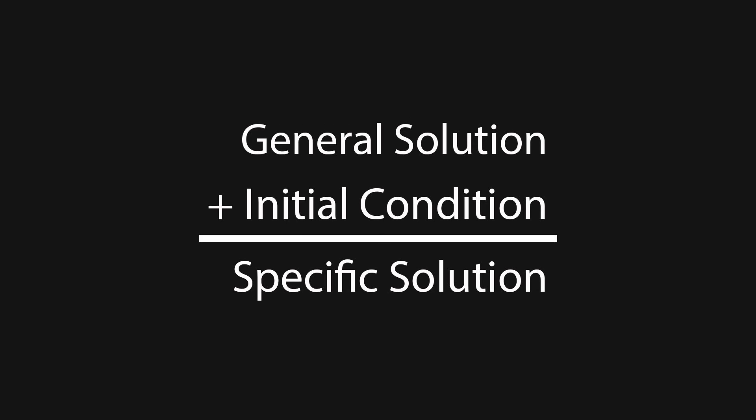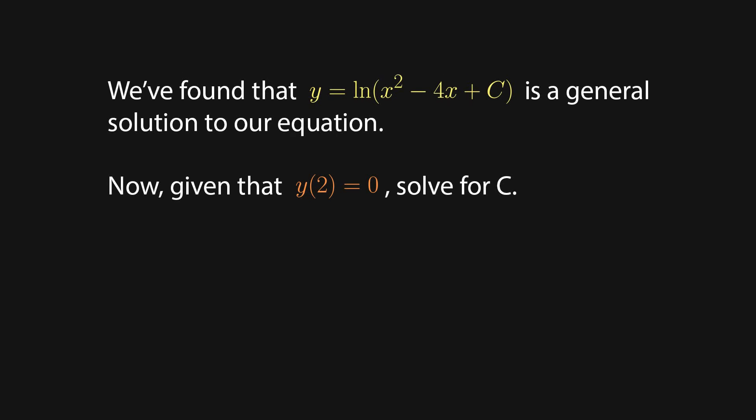Once we've used our initial condition to solve for our mystery constant, we're left with a specific solution. We found that y equals the natural log of x squared minus 4x plus c is a solution to our equation, but now we're given that y of 2 equals 0. Solve for c.